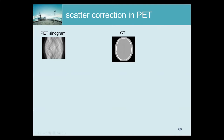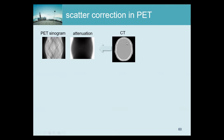That's illustrated here. So we have a PET sinogram, and these days you almost always have a CT because if you buy a PET scanner, it normally comes with a CT. So that means this is the input we have, and now we want to make a scatter-corrected reconstruction. The first thing we do is compute an attenuation sinogram from the CT, and for that we have to convert the CT image to attenuation at 511 keV.